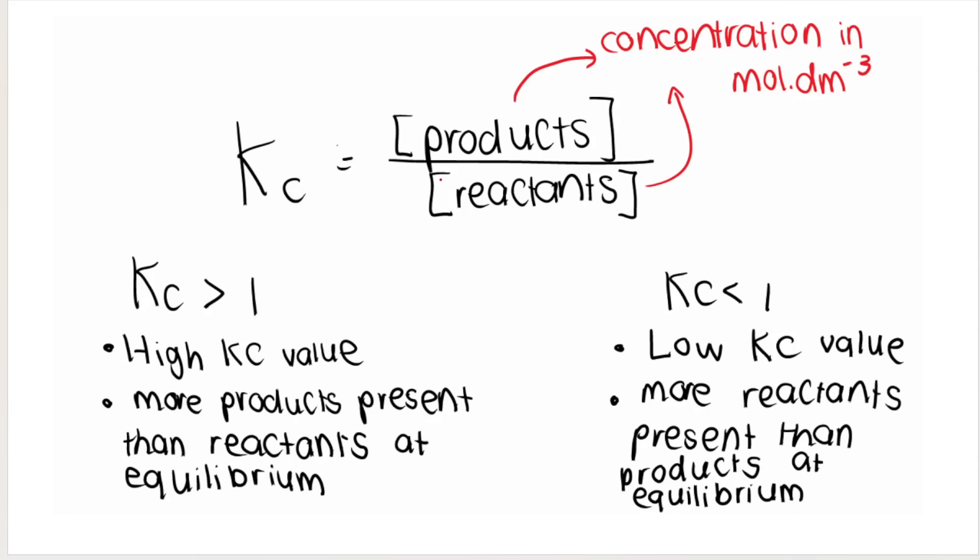If I have more products present than reactants at equilibrium, in other words, if you take a look at how to calculate my Kc value over here, if my products, my concentration of products is bigger than, greater than my concentration of reactants.